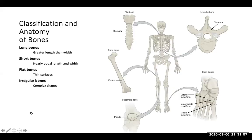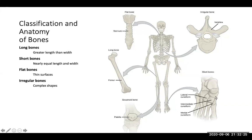Here are the classifications and anatomy of bones that you'll spend a lot of time on in lab. Long bones are greater in length than width — an example is the femur. Short bones are nearly equal in length and width. Flat bones are extremely thin, like the skull's parietal bones. Irregular bones have complex shapes, like your vertebrae. Sesamoid bones are also a distinct category, and short bones are found in the wrist and ankles.